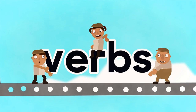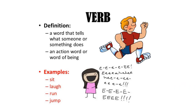Verbs is one of the parts of speech that we are going to deal with today. Let us begin with the very basic — the definition of verb. From the primary level itself, we have heard that verb is a doing word, an action word. A verb is a word that tells what someone or something does — an action word or word of being, a state of being as well. For example, sit, laugh, run, jump — these words show some kind of action and these are verbs.